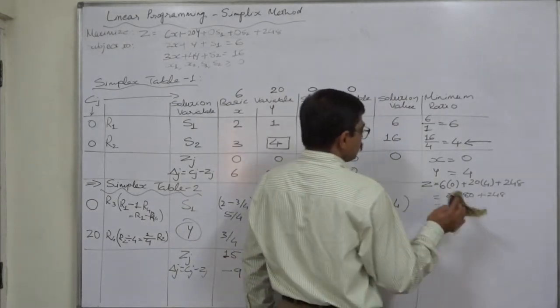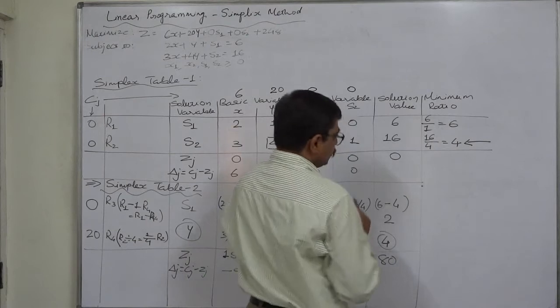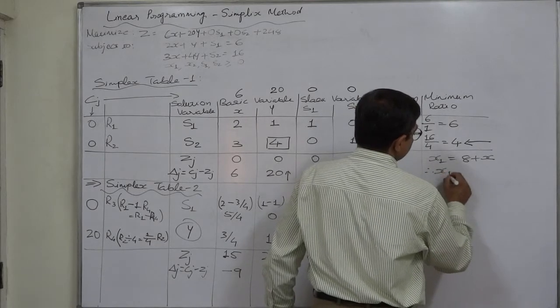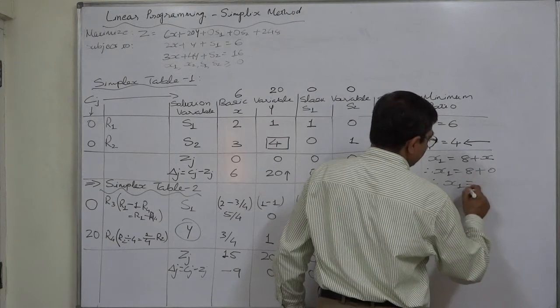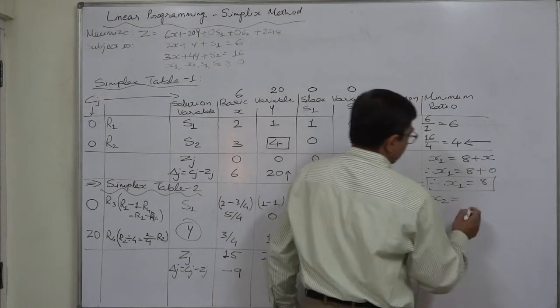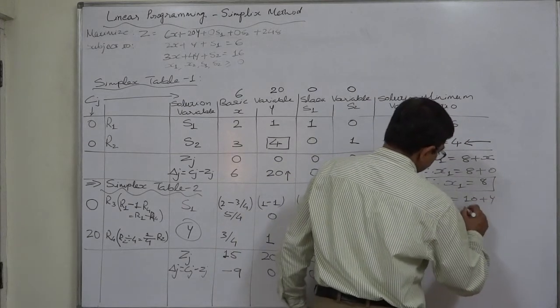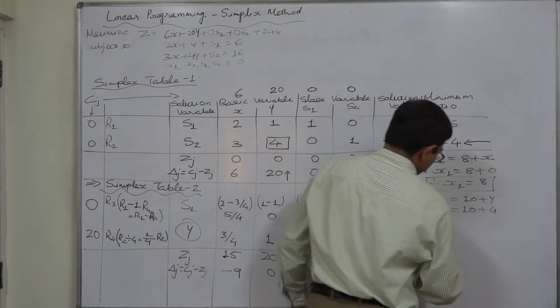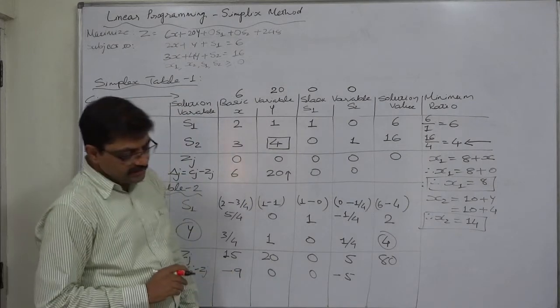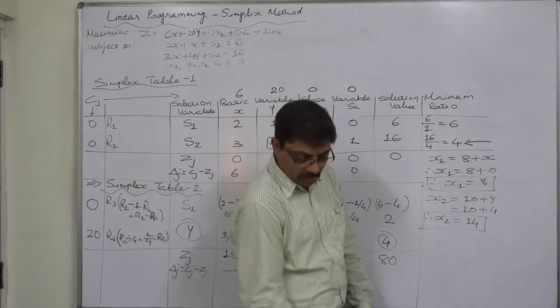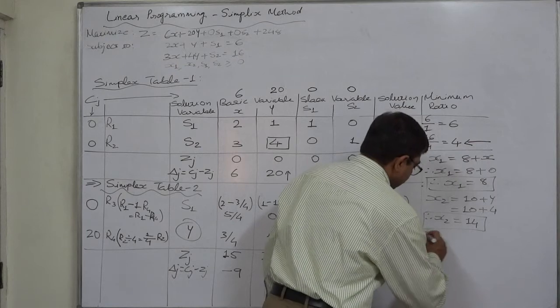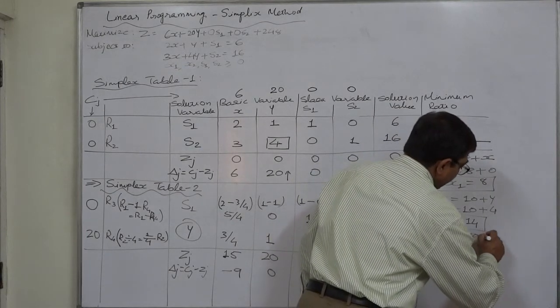X1 was 8 plus x, therefore x1 is 8 plus 0, therefore x1 in the optimal solution of the original problem comes to 8. X2 was 10 plus y, that is 10 plus 4, so x2 is 14. The original z was 6 x1 plus 20 x2, that is 6 into 8 plus 20 into 14: 48 plus 280. So the maximum z is 328.